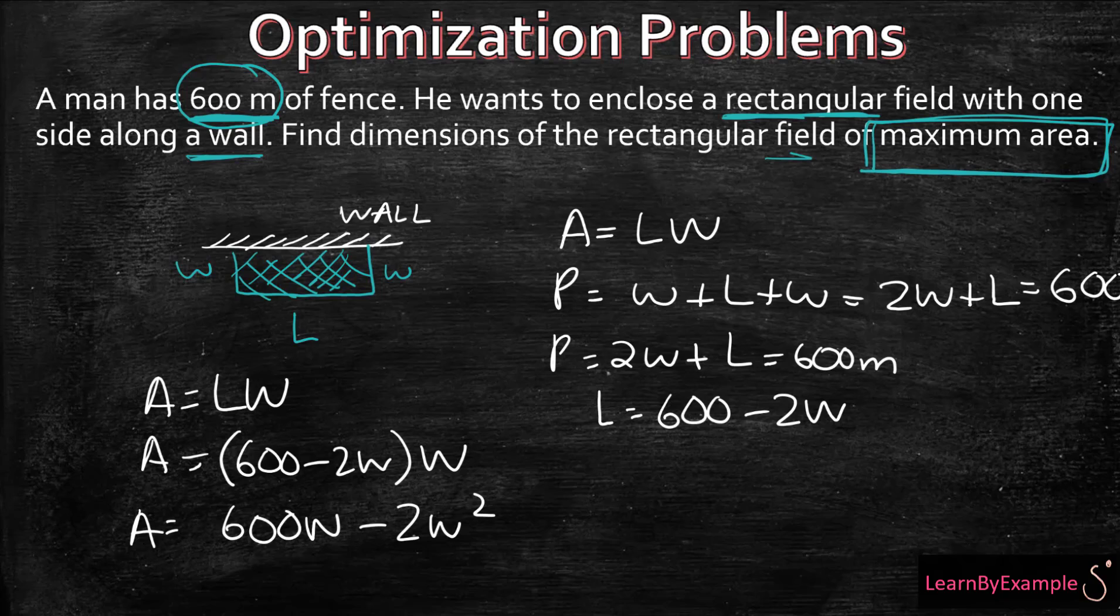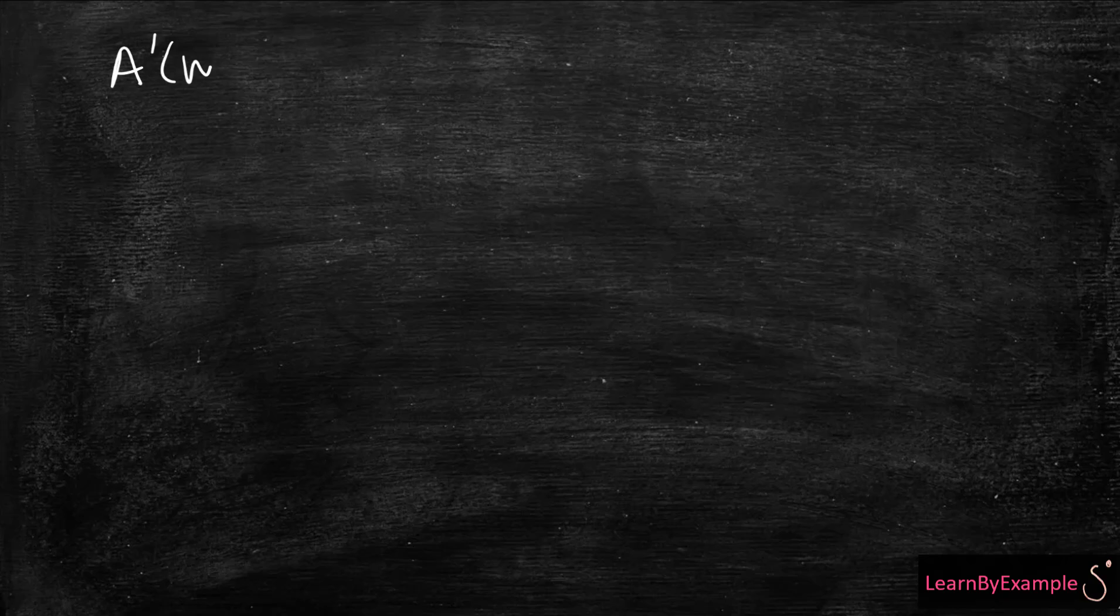Now we have the equation of our area. So in order to find the maximum, we have to take the derivative. The derivative of area in terms of W. The area of W is 600W minus 2W squared. So remember, when you take the derivative, you're going to multiply the exponent by the constant of that unknown, and then you're going to subtract 1. So in this case,